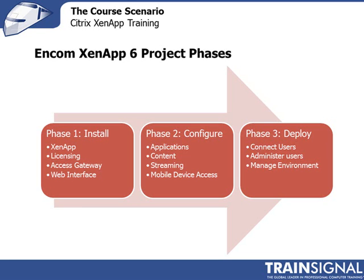Phase two, we move into configuration. We're going to configure published applications and streamed applications. We're going to publish content and desktops, addressing applications of different sizes and requirements differently. We'll also look at content streaming, and configure mobile device access using the access gateway.